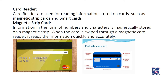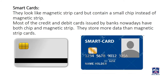Another type is the smart card. Smart cards look like magnetic strip cards but contain a small chip instead of a magnetic strip. Most credit and debit cards issued by banks nowadays have both a chip and a magnetic strip. Smart cards store more data than magnetic strip cards. Nowadays you will find both a magnetic strip and a chip on your ATM, debit, or credit cards.